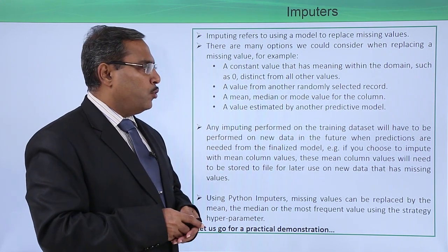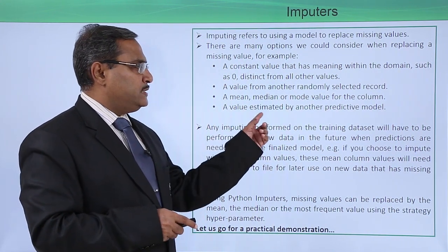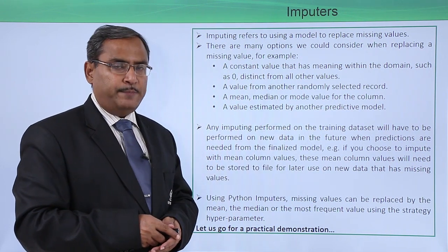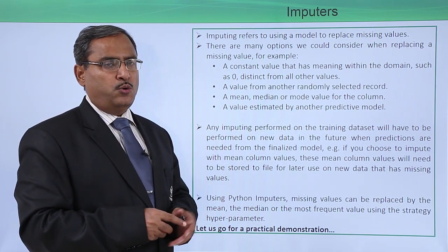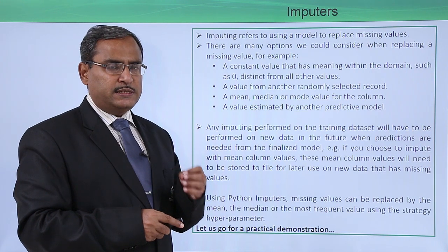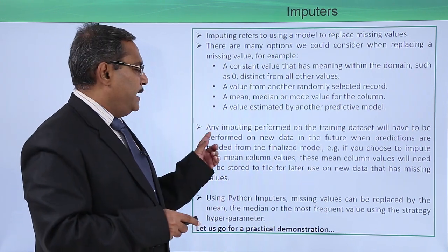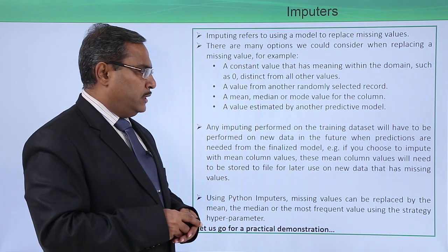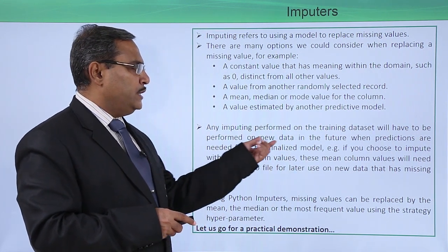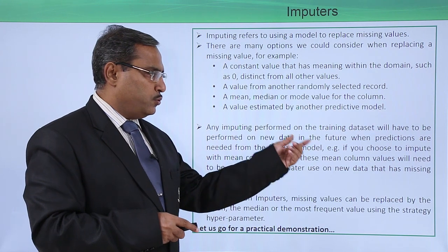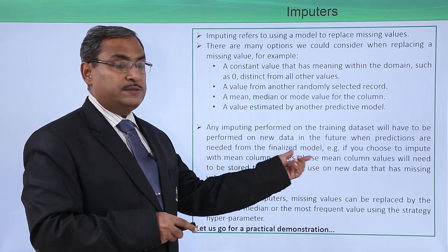Other options include a mean, median, or mode value for the column, or a value estimated by another predictive model. So there are multiple different ways in which we can fill up these missing values. Any imputing performed on the training dataset will have to be performed on new data in future when predictions are needed from the finalized model.